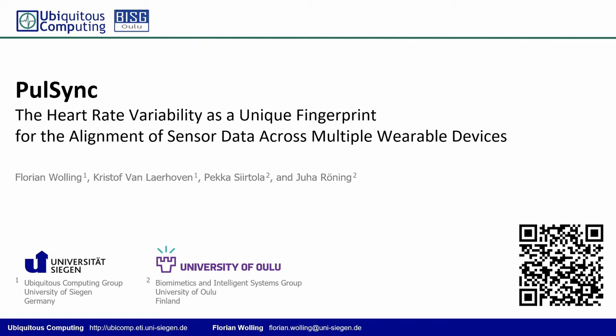Hello from Germany. My name is Loren Wolling. I'm a research associate and PhD candidate of the Ubiquitous Computing Lab at the University of Siegen. Today I'm presenting our paper, Pulsync: Heart Rate Variability as a Unique Fingerprint for the Alignment of Sensor Data Across Multiple Wearable Devices. The idea was born during my research visit in Finland at the Biomimetics and Intelligent Systems Group of the University of Oulu.